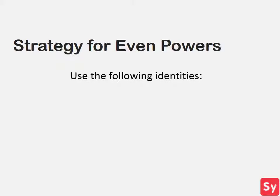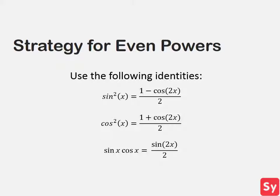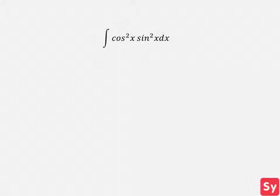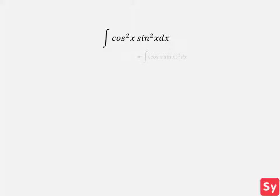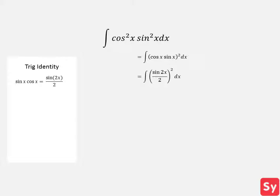Now we'll learn the strategy for even powers. The trick to solving these integrals is to use one or more of the following identities. For our example with even powers, we have the integral of cosine of x squared times sine of x squared with respect to x. We could rewrite sine of x squared as 1 minus cosine of 2x over 2, and cosine of x squared as 1 plus cosine of 2x over 2. However, the simpler way is to use the last identity, rewriting the integrand as cosine of x times sine of x, squared.